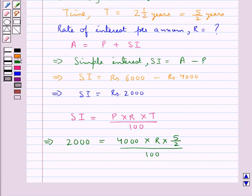From here we get R = 2000 × 100 / (4000 × 5/2).